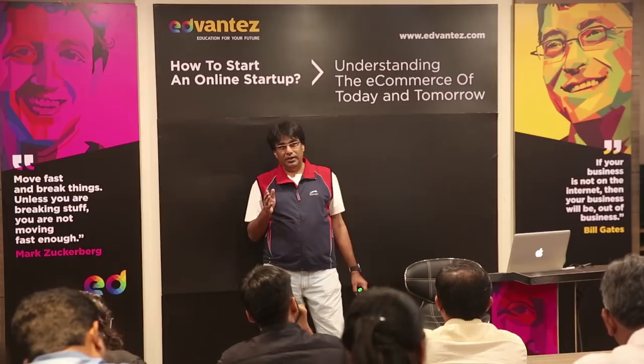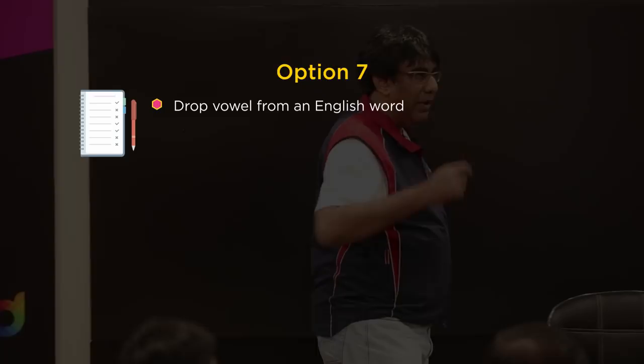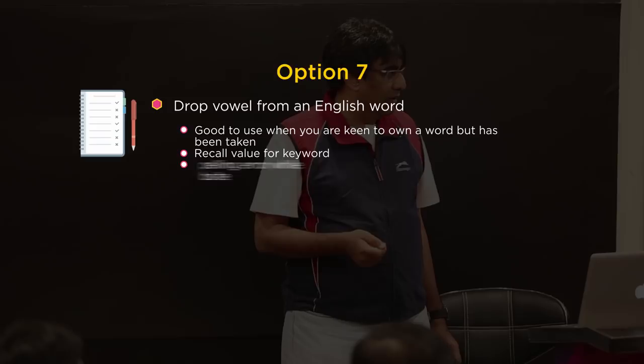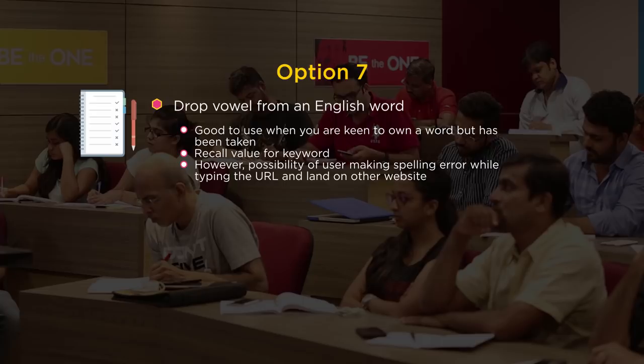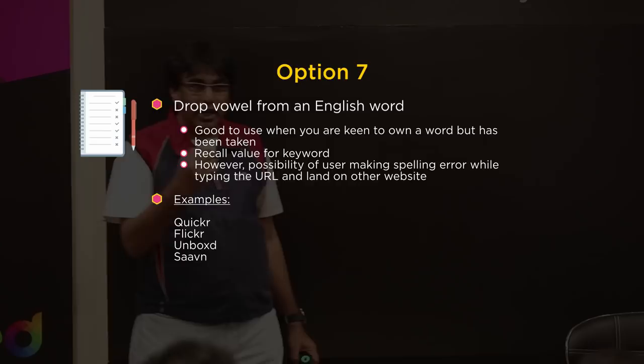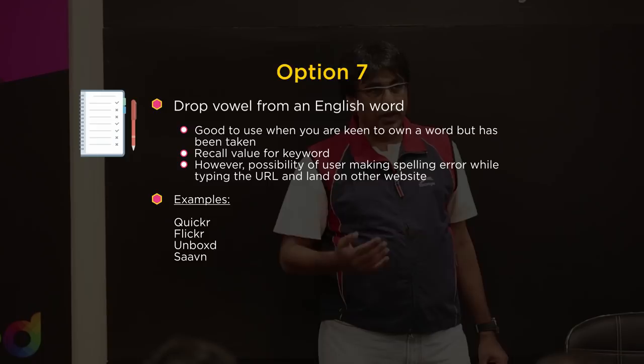Option seven is the new trend of dropping vowels — A, E, I, O, U. At times you may want a specific word but it is not available. In such a case, drop a vowel and it still pronounces the same way. For example, Quikr — drop the 'e' — it still reads as Quicker. Or Flickr, Unboxd. You can drop a vowel and still get a domain name for yourself.